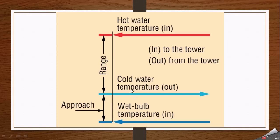In the case of approach, the difference between the cold water outlet temperature and the wet bulb temperature is called approach. The arrow shown represents the makeup water entering the system. The difference between the wet bulb temperature and the cold water temperature is what we call approach. This diagram illustrates the difference between range and approach.